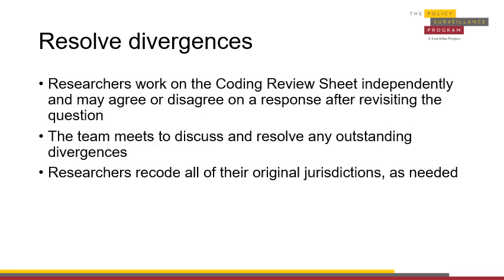Once researchers have explained their issues in the coding review sheet, the research team should meet in person or remotely to discuss any outstanding issues. If a decision was made during original coding that affects previous jurisdictions, researchers have to recode those jurisdictions. Conducting quality control on a rolling basis as research is being performed in batches of 10 jurisdictions at a time allows early issues to be rectified before the entirety of a project's research is complete. This also serves to educate the researchers on the complexities of the project so that later research is facilitated.